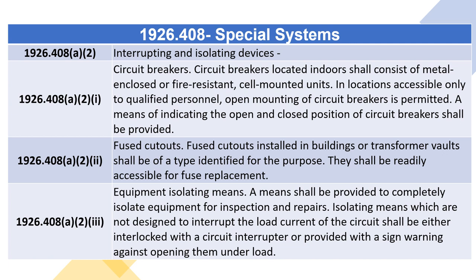1926.408(A)(2)(ii) — Fused Cutouts. Fused cutouts installed in buildings or transformer vaults shall be of a type identified for the purpose. They shall be readily accessible for fuse replacement. 1926.408(A)(2)(iii) — Equipment Isolating Means. A means shall be provided to completely isolate equipment for inspection and repairs. Isolating means which are not designed to interrupt the load current of the circuit shall be either interlocked with a circuit interrupter or provided with a sign warning against opening them under load.